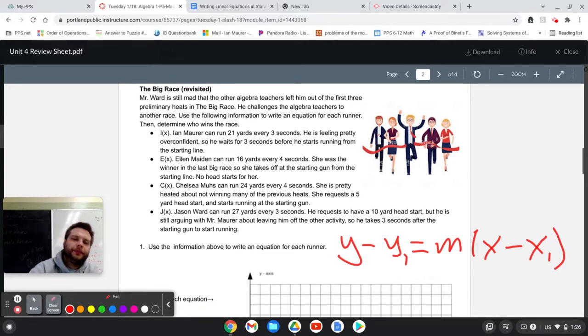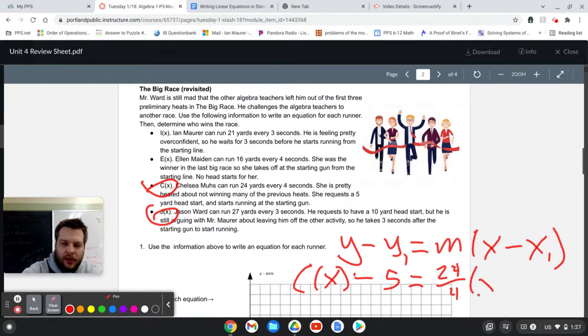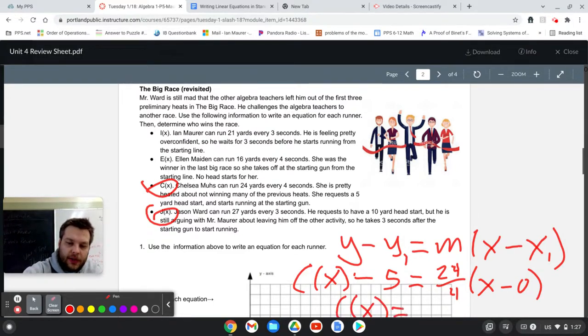Like for example, if I look at c of x and j of x. If I look at Chelsea here, c of x can run 24 yards every four seconds and she wants a head start. So she starts there and she starts running right at the starting gun. So you can write it like this. c of x minus five equals m 24 over four times x minus zero. And the reason I wrote it that way is because there's a five yard head start. That's a y value. That's why the five is right where the y1 was. And she ran right at the starting gun. So x is equal to zero.